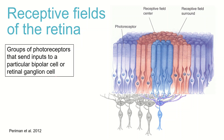Cones and rods are the photoreceptors that respond to light in the retina. On and off center receptive fields have different responses to light based on differences in the bipolar cells.